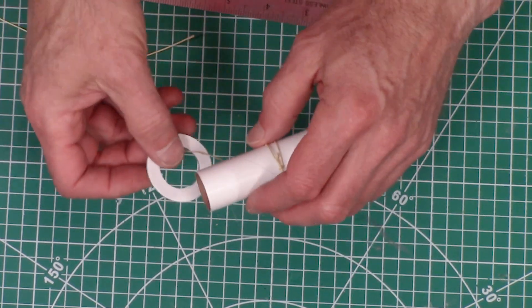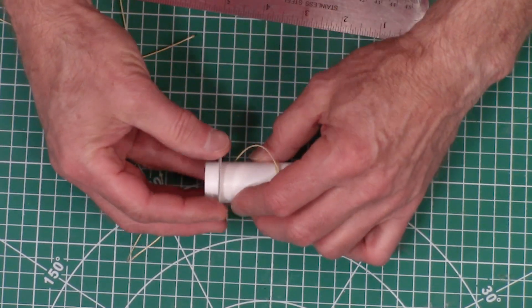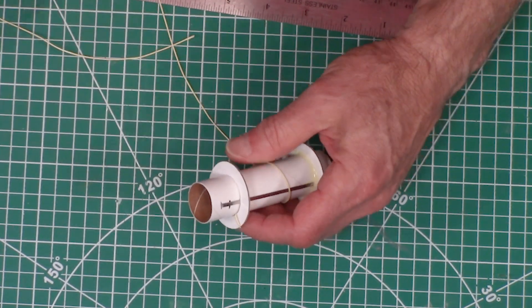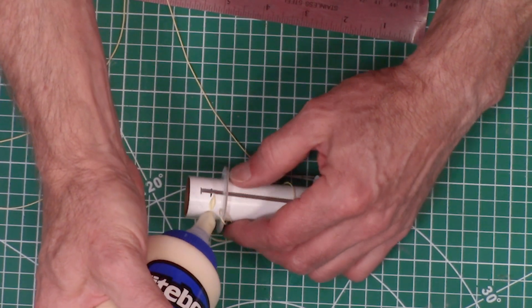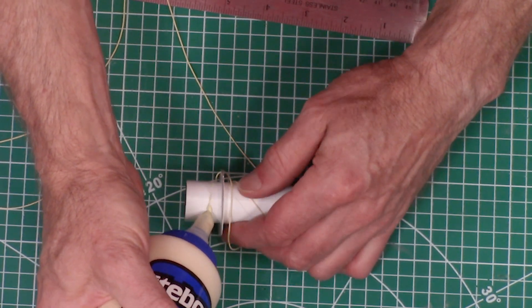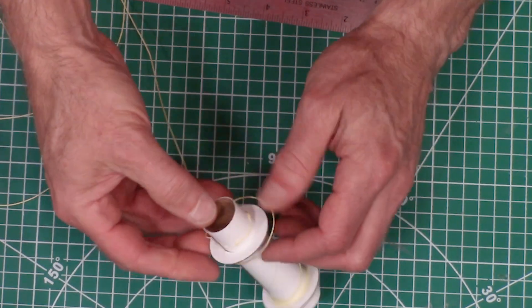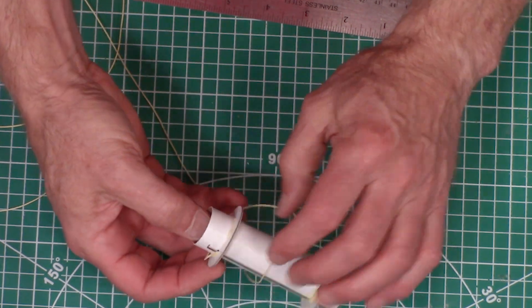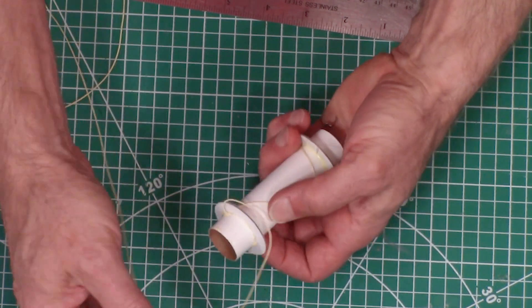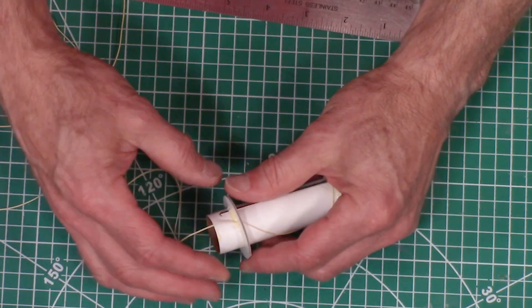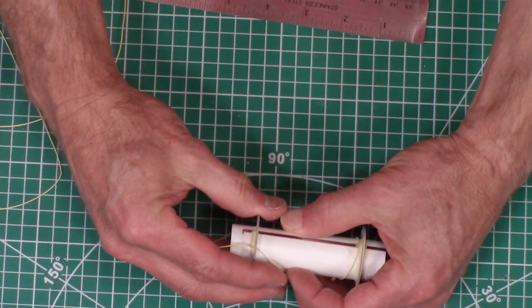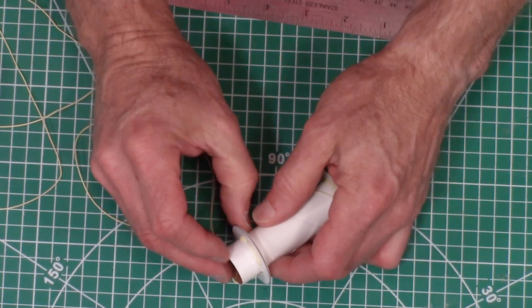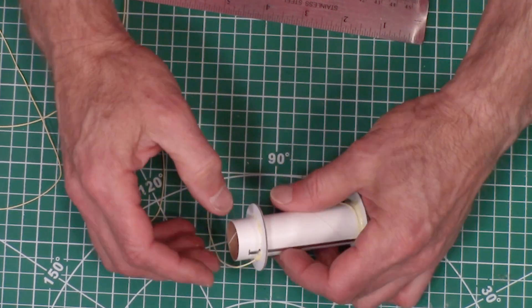In step five, we're going to take the other centering ring here, pass the shock cord through it. This is going to go over the tube and we're going to glue it on this line right here. Make sure it's nice and straight.